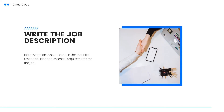The first step is to write a job description. This is a critical step that you should never skip. Job descriptions should contain the essential responsibilities and essential requirements for the job. They should not include a list of 40 different tasks — you're looking for core functions, not a comprehensive task list.